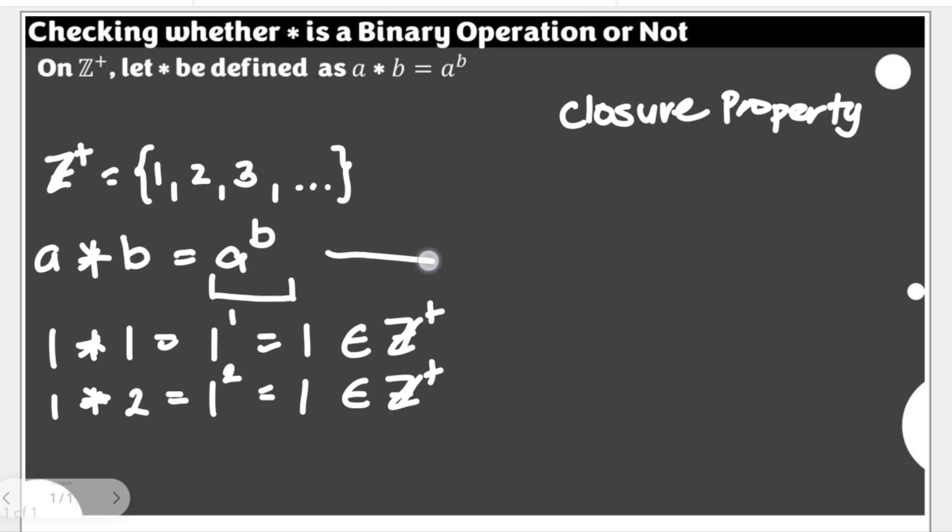When can we say that a to the power of b is not an element of Z+? That would mean the result is not an integer. Number one, if b is less than 0. Because if b is less than 0, we will have here a negative integer, which will give us a fraction.